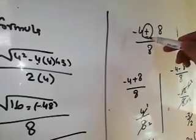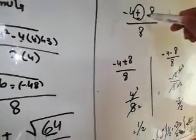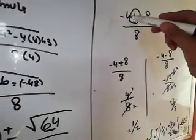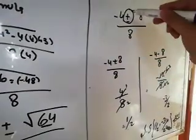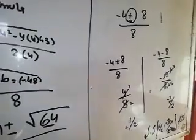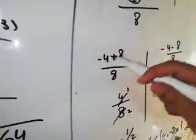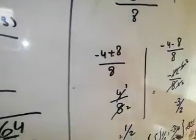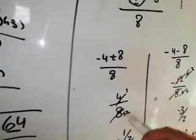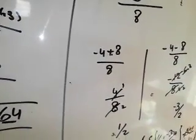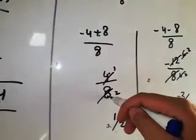Now we have two values: one with plus and one with minus. First, taking the plus: (-4 + 8) / 8. Minus 4 plus 8: minus plus gives us 4, so we get 4/8. Cutting 4 and 8, we get 1/2.